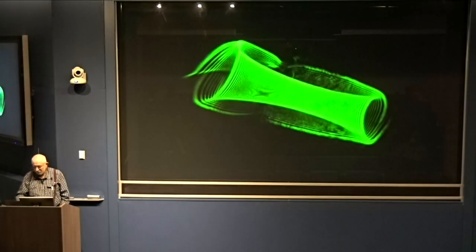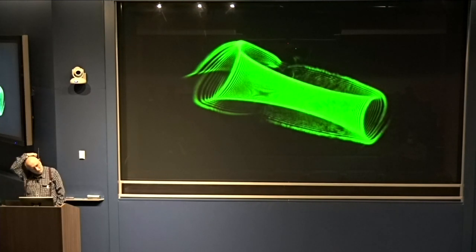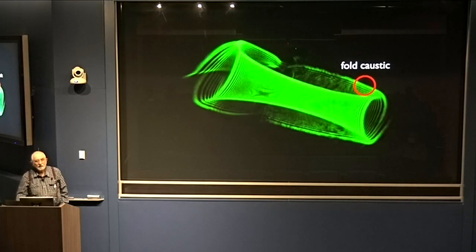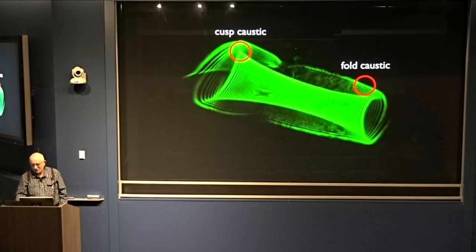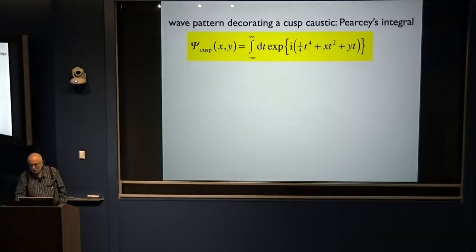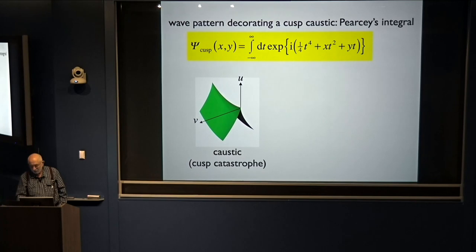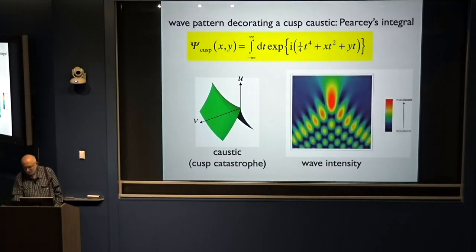Here's a pattern of caustics produced by shining light through bathroom window glass. This is a smooth caustic called the fold in the language of catastrophe theory, which classifies these shapes — the Airy function across it. But here's the cusp caustic — it's the Peircy function. This integral is a function of two variables x and y, and there's the intensity.